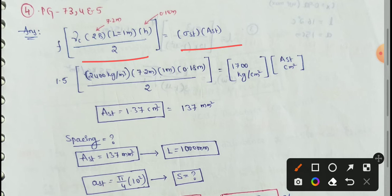The frictional force formula and resisting force formula is sigma st into A st. First given data: choose a concrete pavement with thickness 18 cm, which is 0.18 m. Next, 2 lanes of 7.2 m width with longitudinal joints.